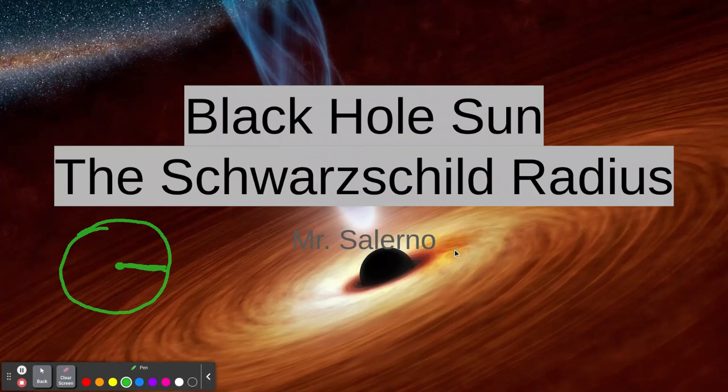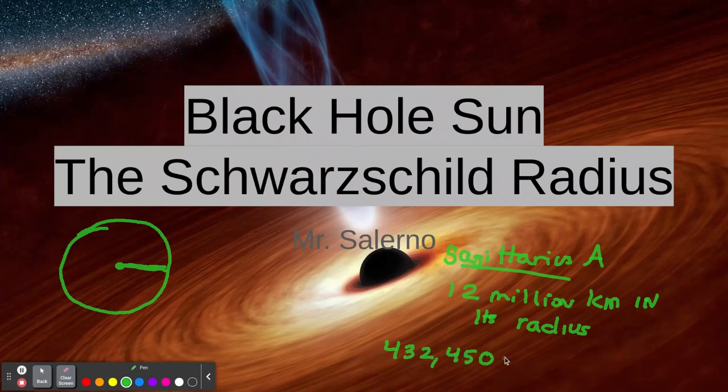So in our galaxy, right over here, we have a name for our black hole. Every major galaxy has a black hole. Ours is Sagittarius A. And it's a black hole. And Sagittarius A is 12 million kilometers in its radius, not its diameter. 12 million kilometers, much bigger than the sun. Our sun has a radius of 432,450 miles. So 12 million kilometers is about 7 million miles, a little over 7 million miles. So you know Sagittarius A is much bigger than our sun.